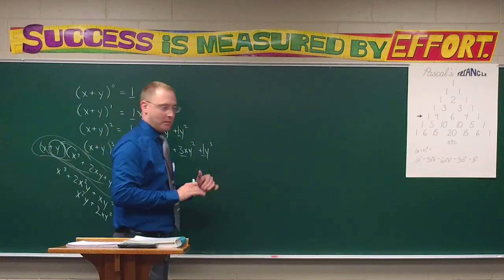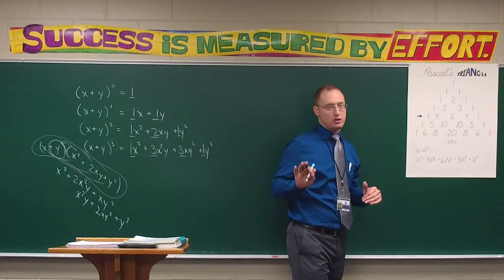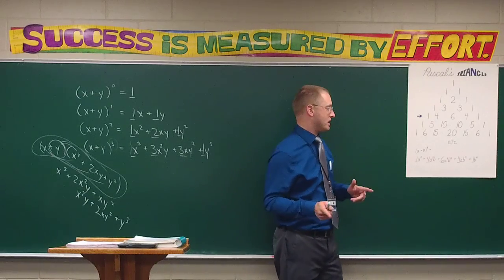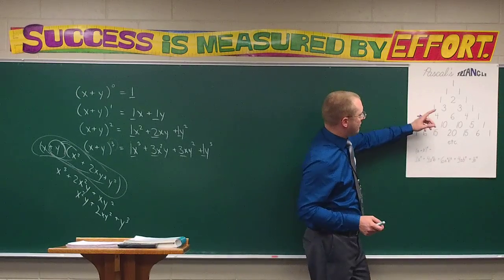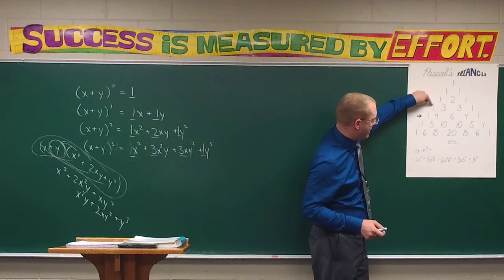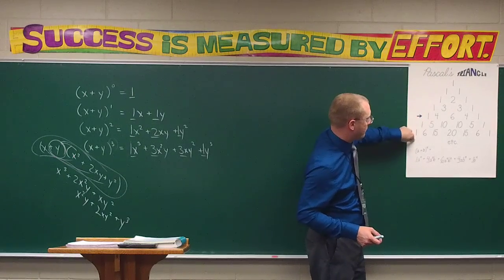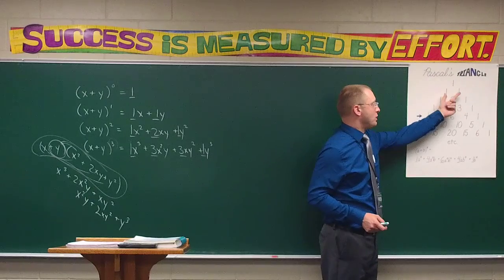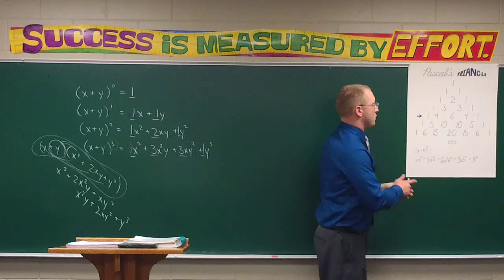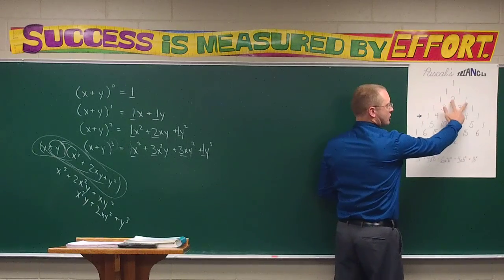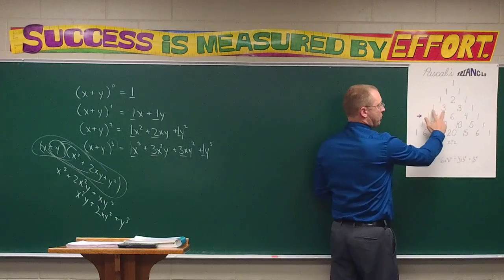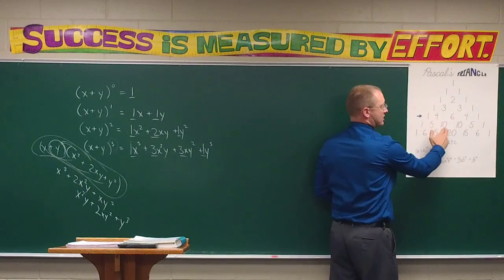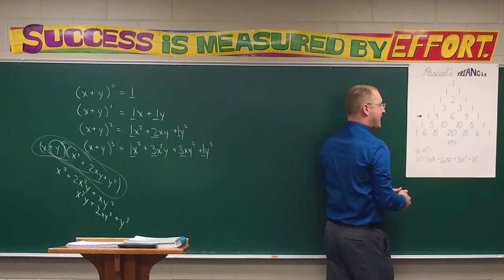First, I need to make sure we see the pattern in Pascal's triangle. We notice that this one always starts the row. Since the row also has to end in a one, if we take these two ones it adds to give two. One and two adds to get three; two and one adds to get three. One and three: four; three and three: six; three and one: four. One and four: five; four and six: ten; six and four: ten; four and one: five. So we see how this row is formed.